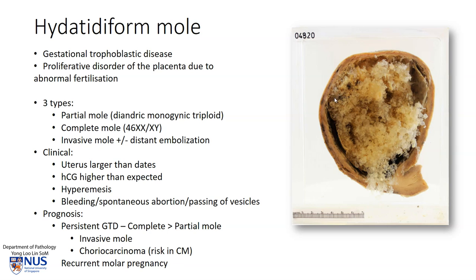In terms of the gross appearance, we saw this example of a complete hydatidiform mole. For the partial mole, it is usually a little bit less obvious, in that there is a mixture of relatively normal-looking placental tissue as well as some of these translucent grape-like vesicles. Also, in a partial mole, there may be a gestational sac present.